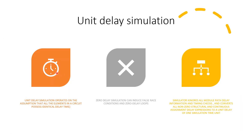The second type is unit delay simulation. Unit delay simulation operates on the assumption that all elements in the circuit have identical delay times. Hence, providing any random delay values is similar to adding a unit delay. This is easier to implement than an SDF simulation. Zero delay simulations can induce false race conditions and zero delay loops, so the simulator ignores all module path delay information and timing checks, and converts all non-zero structural and continuous assignment delay expressions to a unit delay of one simulation time step. This is a trade-off between a zero delay simulation and an actual SDF simulation.